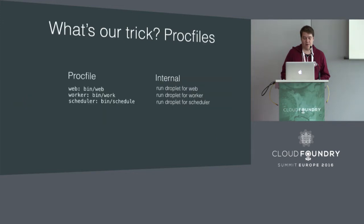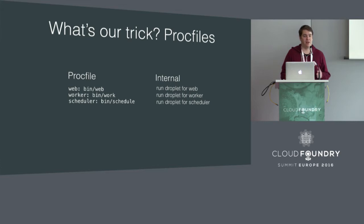The way we're able to do this is by specifying a proc file in the application - just at the root where you have your index.html, your gem file, whatever it is. Just create a simple proc file specifying your web, your worker, and your scheduler. The v3 API can look at this and say it's going to push three apps for the same bits, with only one staging process.